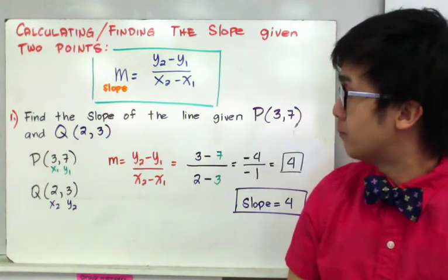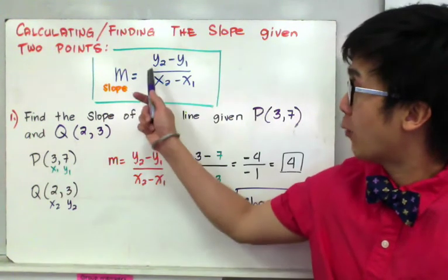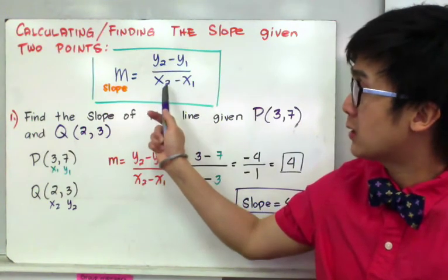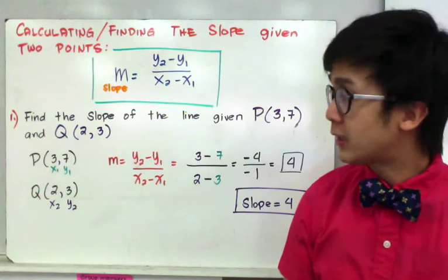In finding the slope of this particular line given two points, using the formula y sub 2 minus y sub 1 all over x sub 2 minus x sub 1, your first step is to label each of your ordered pairs.